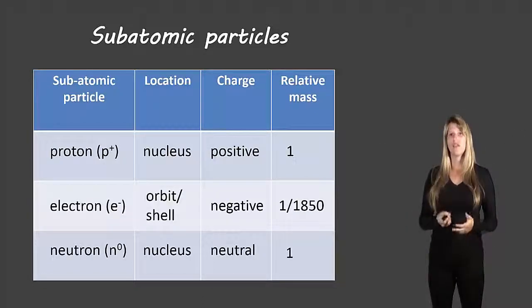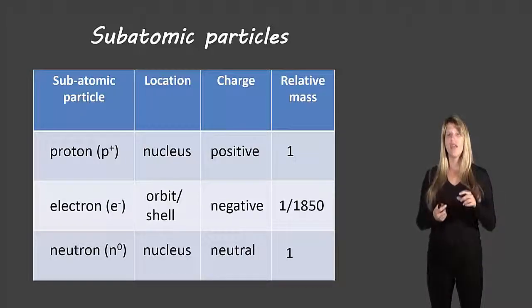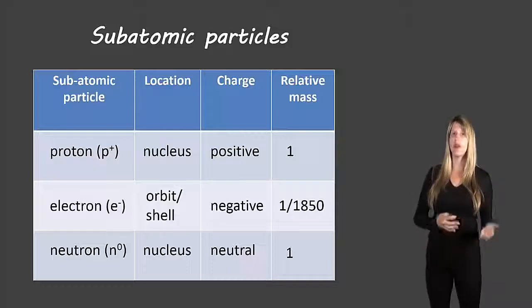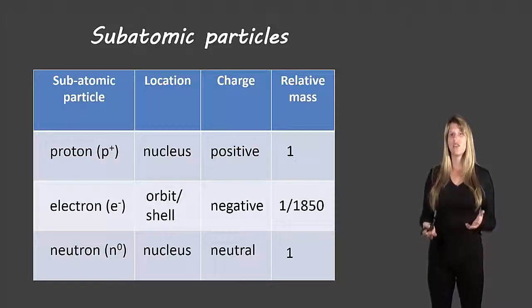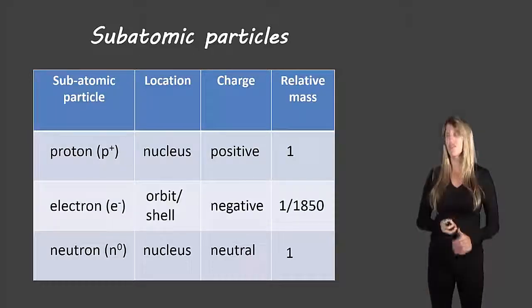And then neutrons have the symbol n, lowercase n with a superscript 0, n for neutron and 0 because it does not have any charge. It's not positive or negative, it's neutral. And these are located in the nucleus alongside the proton, so in the very center of the atom.